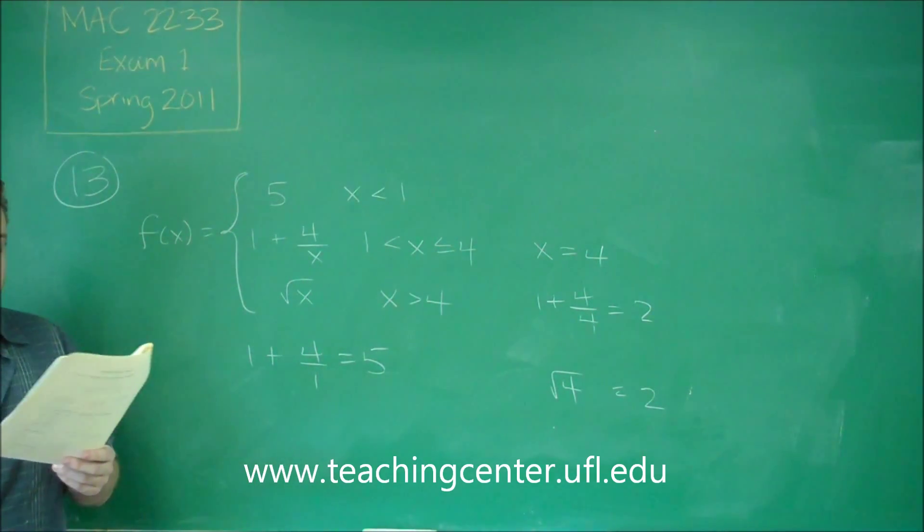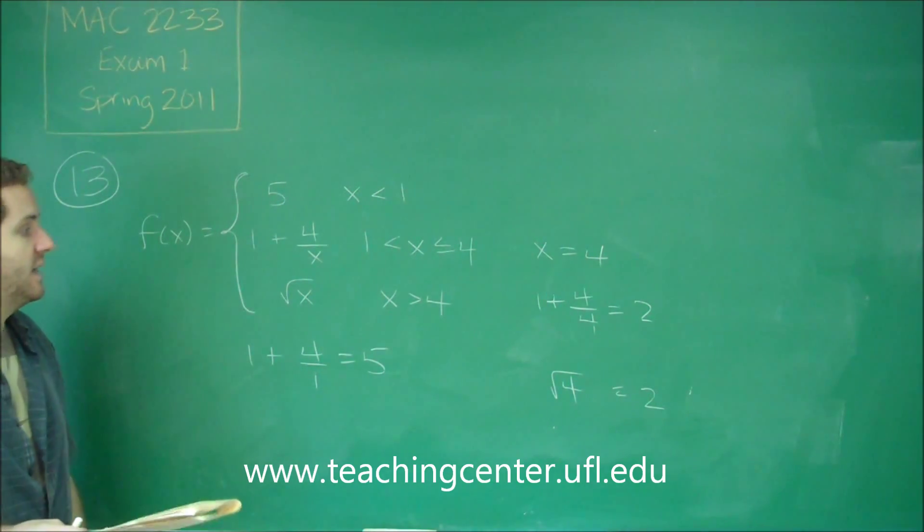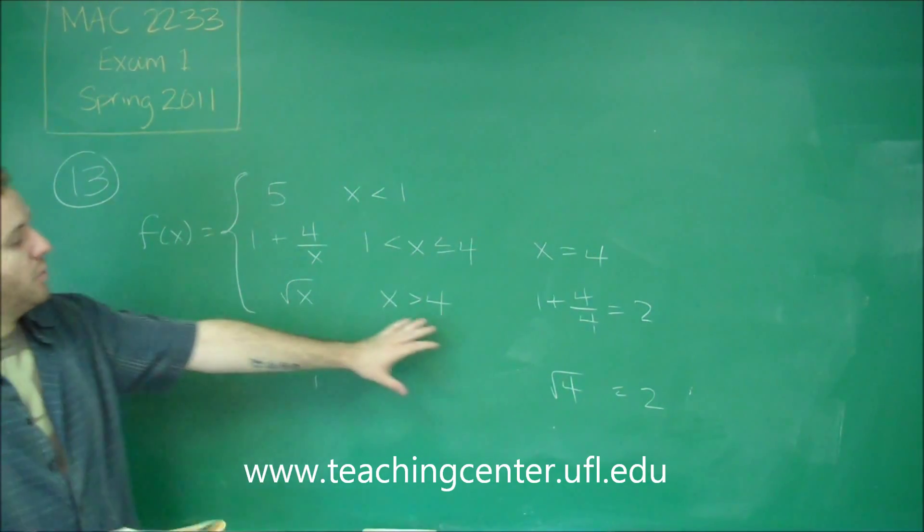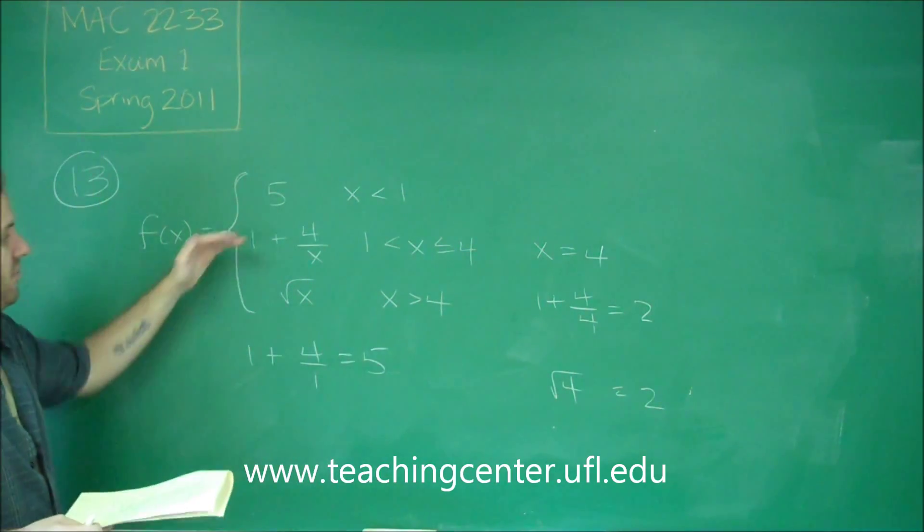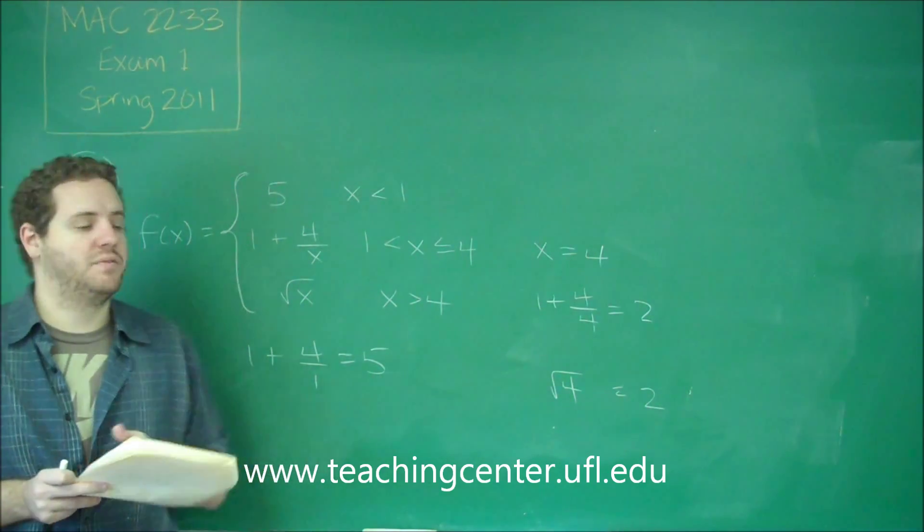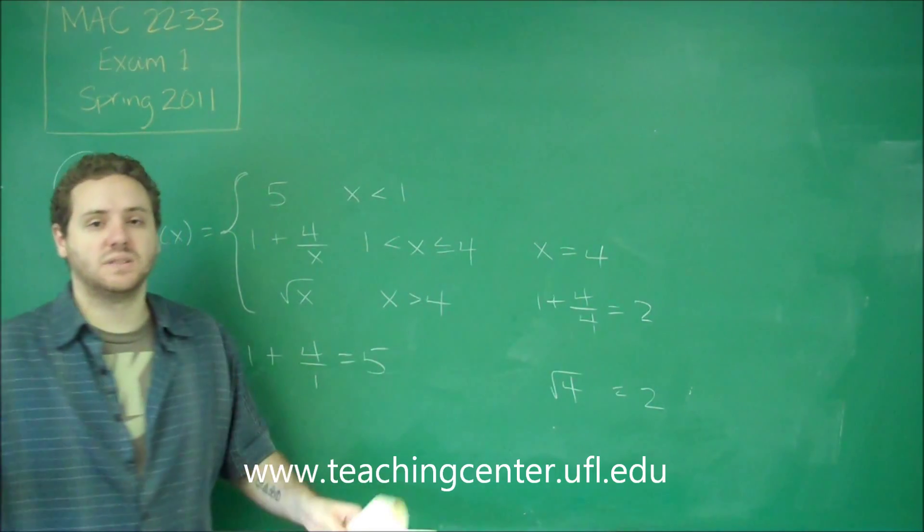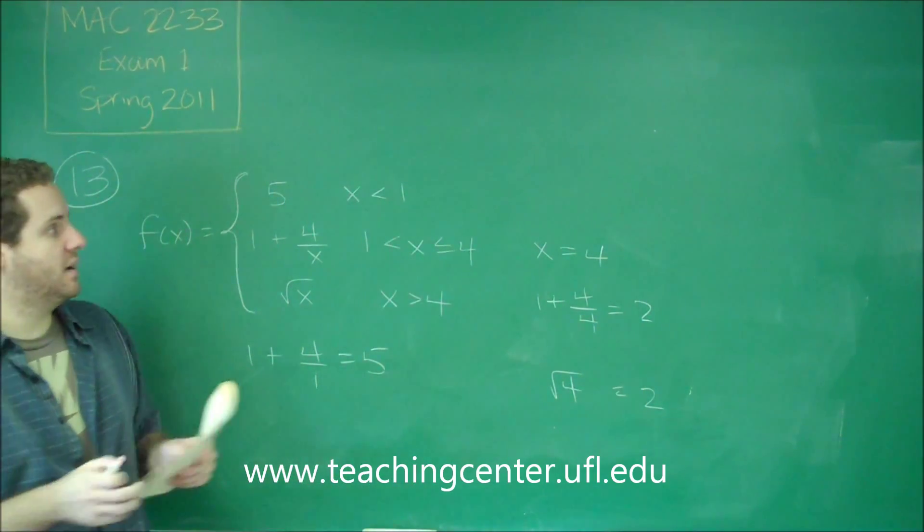And finally, for Roman numeral 3, f of x is continuous at x equals 4. That's what we just showed by doing this. The piece from the left and the piece from the right, not only do they meet at the same y value, but one of them has an equal sign, so the point is defined there.